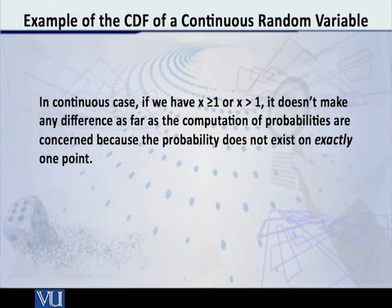In the continuous case, you should already know, and if you don't then note now, that if we have x ≥ 1 or x > 1, it doesn't make any difference as far as the computation of probabilities is concerned, because the probability does not exist on exactly one point.